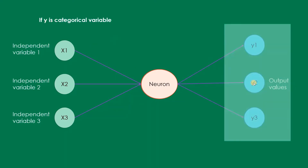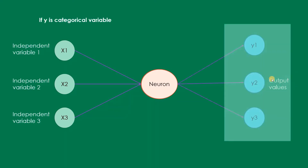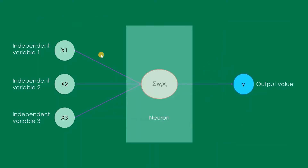Up to now we had the output value as binary — either a cat or a dog — but in general there can be multiple classification problems, so there can be multiple output values as well if y is a categorical variable. Now, looking at this neuron, the input variables one, two, and three are provided along with some weights. We will talk about these weights — w1, w2, and w3 — and how they are changed according to the error we get.